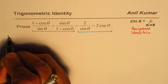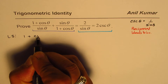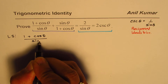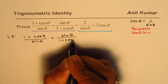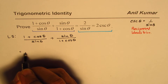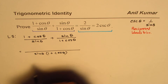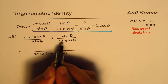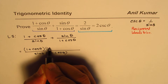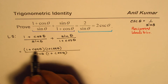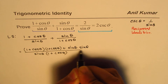In identities we prefer to start from one side — let us choose the left side. The left side is (1 + cosθ)/sinθ + sinθ/(1 + cosθ). We take the common denominator sinθ(1 + cosθ), so the numerator becomes (1 + cosθ)(1 + cosθ) + sinθ·sinθ, which can be written as (1 + cosθ)² + sin²θ.